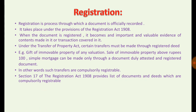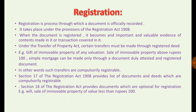Section 17 of the Registration Act 1908 provides a list of documents and deeds which are compulsorily registrable — for their validity, registration of such documents is necessary. Section 18 of the Act provides a list of documents for which registration is optional, meaning registration is not necessary for their validity.